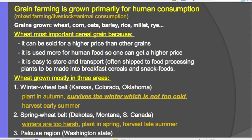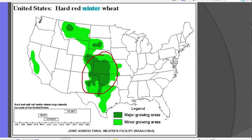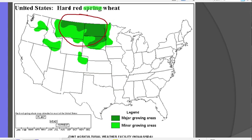Here's a map of winter wheat, grown largely in the area around Colorado, Oklahoma, and Kansas. And then spring wheat — planted in spring, harvested in late summer — is grown in the Dakotas, Montana, and into Canada.